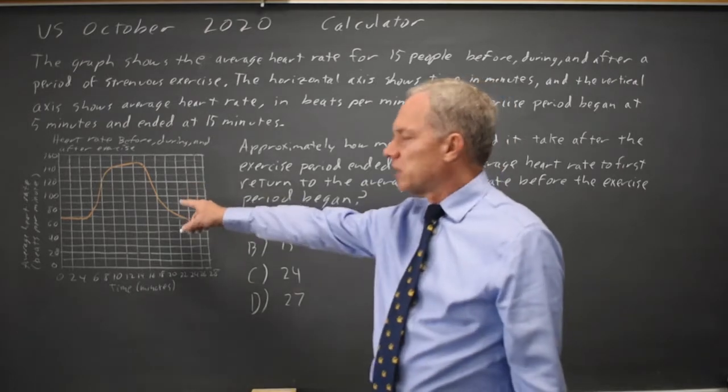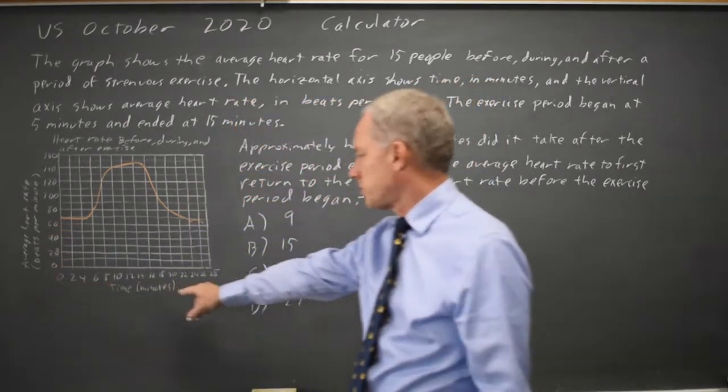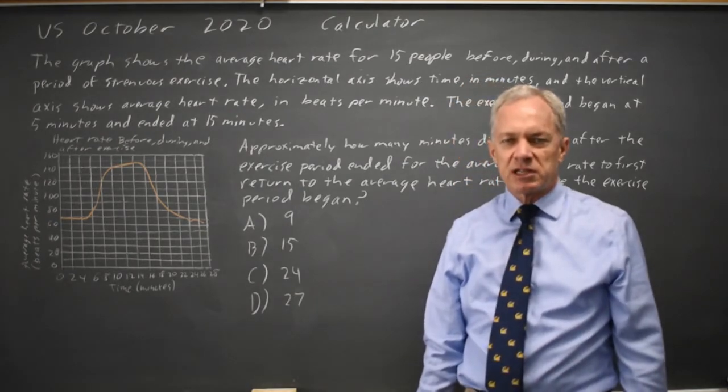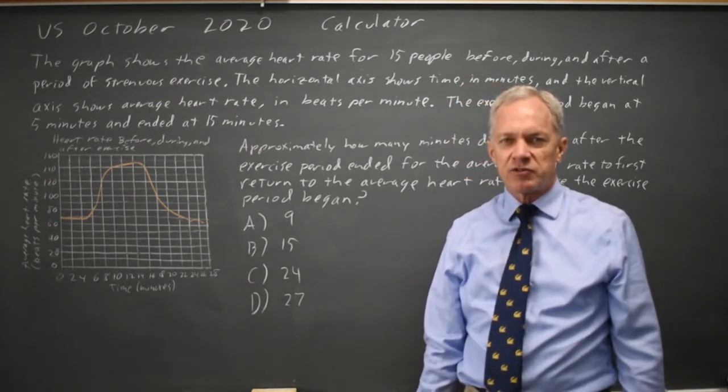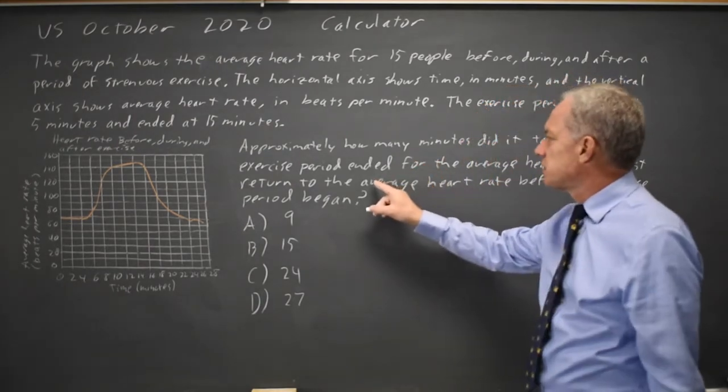We have a graph of heart rate in beats per minute against minutes for the average of a group of people exercising from time 5 to time 15 on this graph.